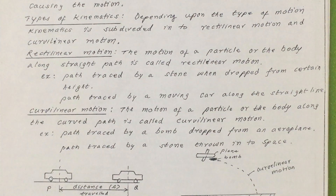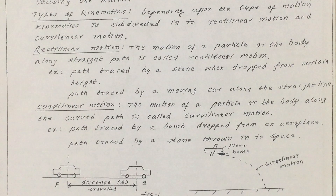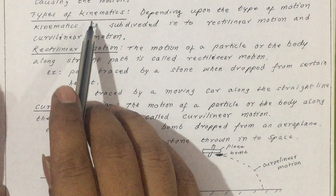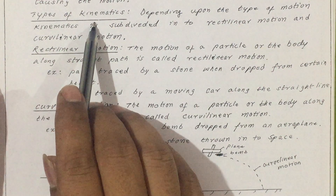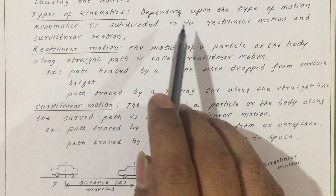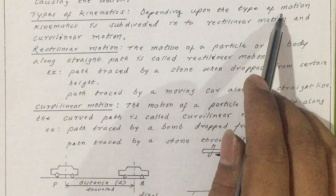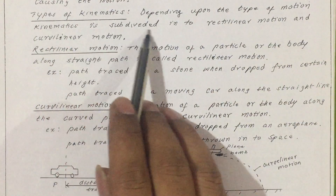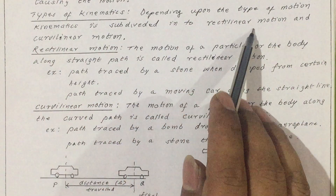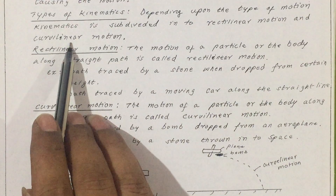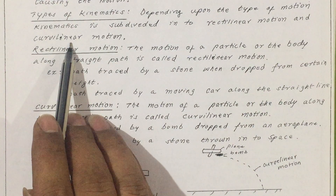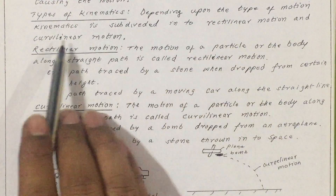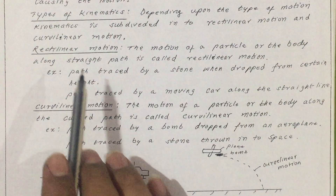Coming to the types of kinematics, depending upon the type of motion, kinematics is subdivided into rectilinear motion and curvilinear motion — two types: rectilinear and curvilinear.